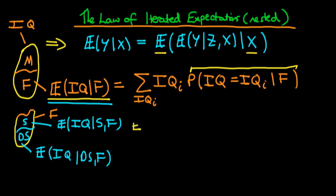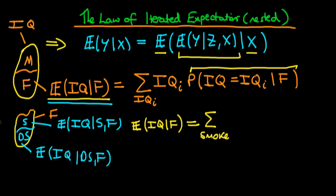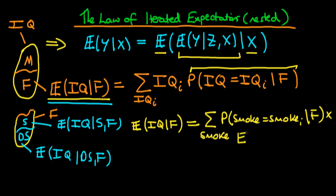We're trying to evaluate the expected value of IQ given that an individual is female — in other words, the average level of IQ within the female population. What the law of iterated expectations tells us is that this is the same as taking the average across each of these subgroups. We're summing over all the different cases for smoking — there are just two: an individual smokes or they don't. We're summing over the probability that smoking takes on that particular value given that the individual is in the female population, times the expected value of an individual's IQ given which subgroup they're in and given that they're in the female population.